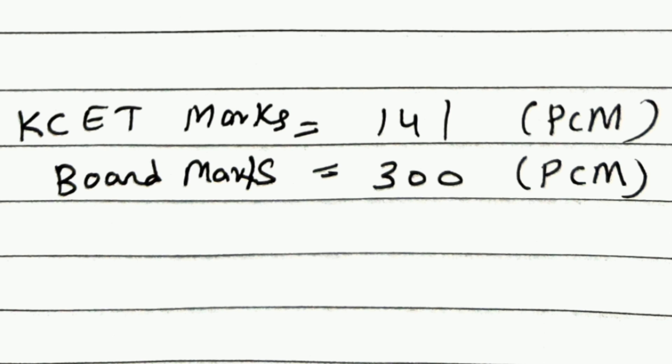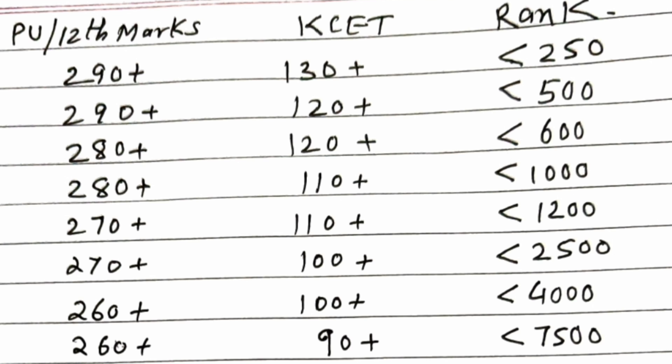So this marks versus rank analysis is based on KCET marks of 141 in PCM and the board marks of 300 in PCM for PU or the class 12 CBSE ICSE boards. So let's see the analysis based on this.